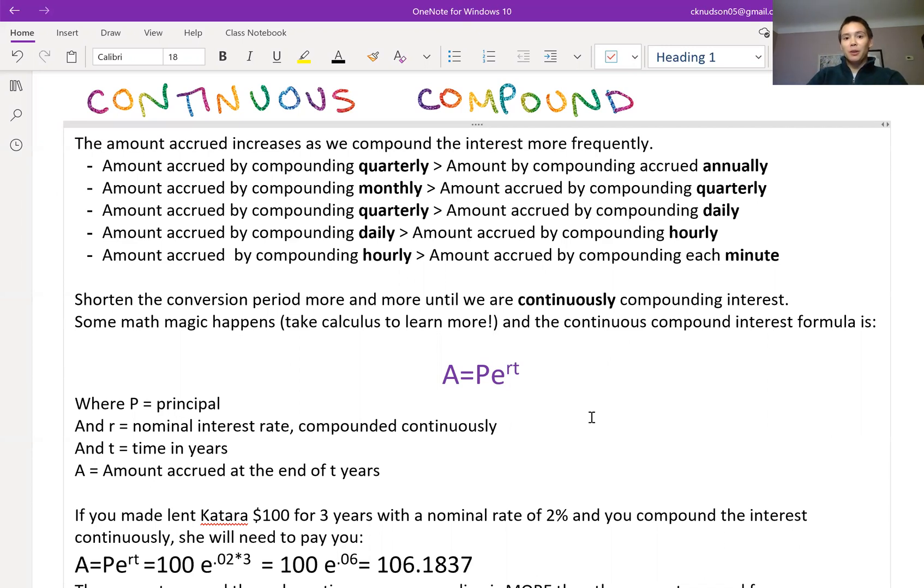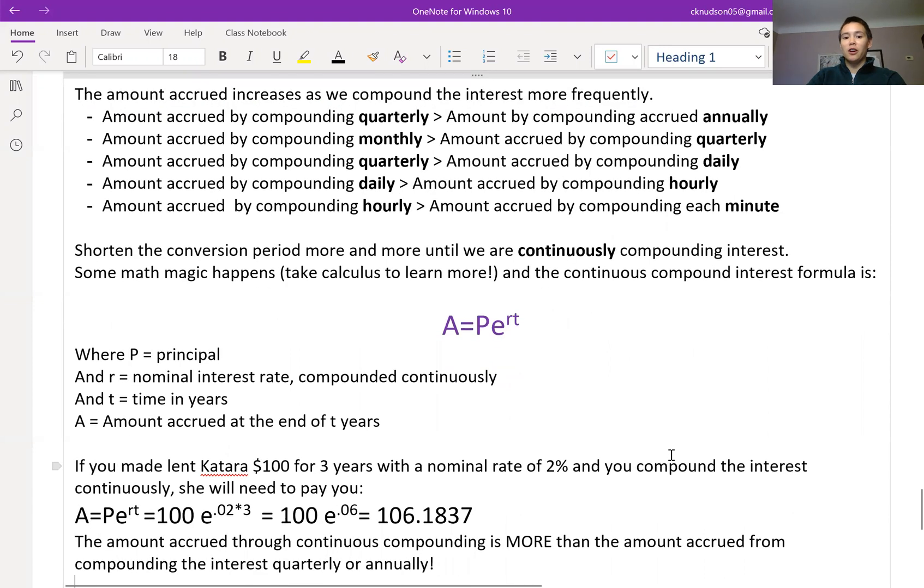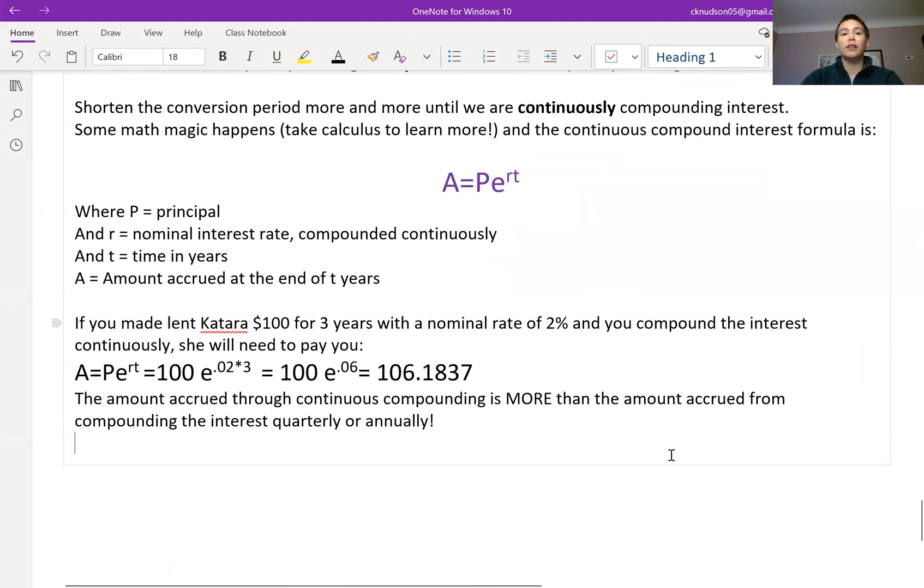Okay so let's go back to the example of lending money to your sister Katara. So say that you lend her $100 for three years with a nominal interest rate of 2% and you're going to actually compound the interest continuously. How much will she need to pay you back in three years?